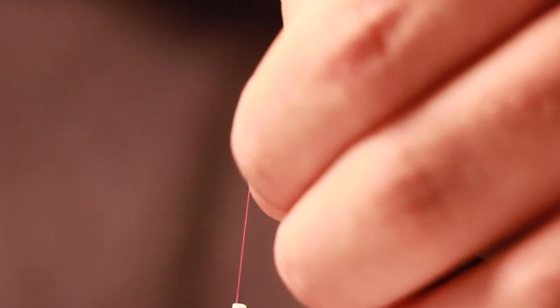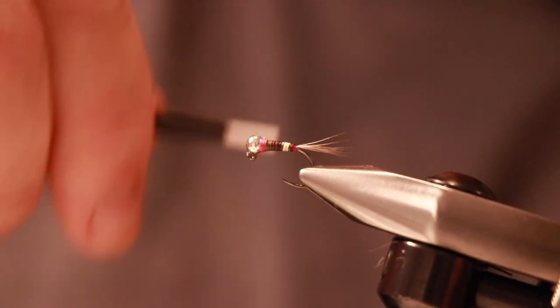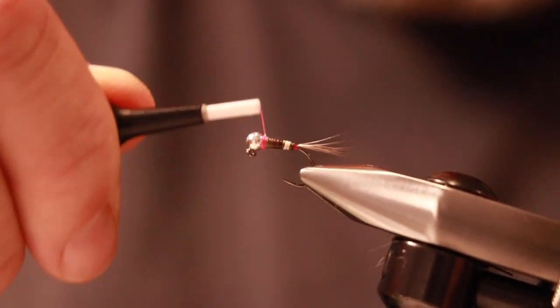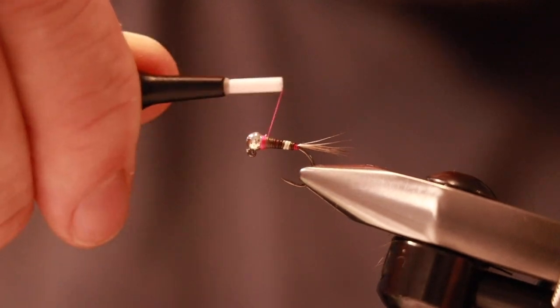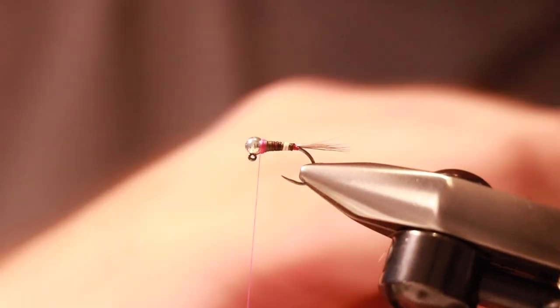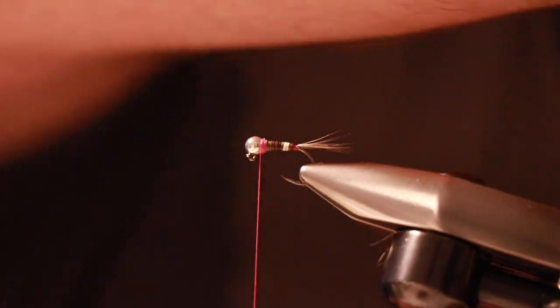You've got a wee tag, you can just flatten it down a wee bit. And then I'm just going to create a tiny wee collar, nothing huge. All we need to do now is whip finish and then we'll add some UV resin.